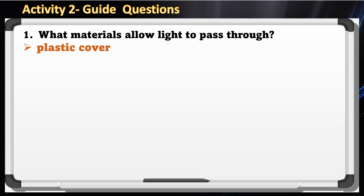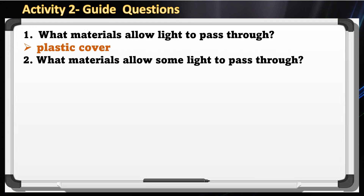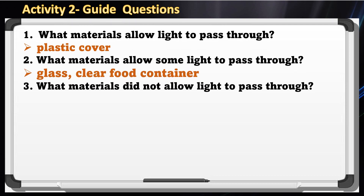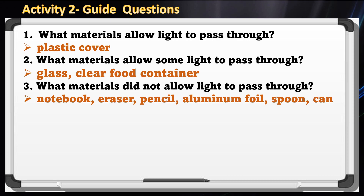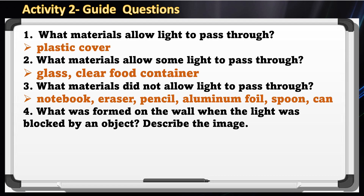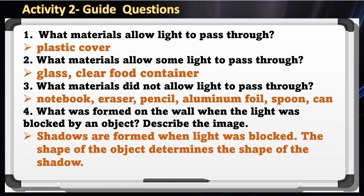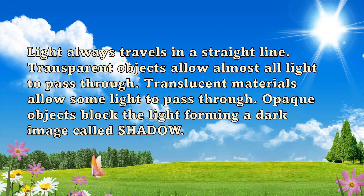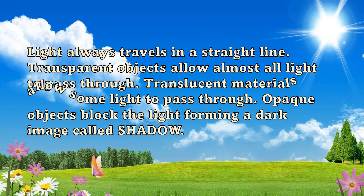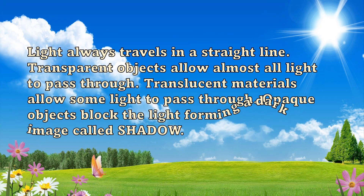Now let's answer the guide questions. One: What materials allow light to pass through? Two: What materials allow some light to pass through? Three: What materials did not allow light to pass through? Four: What was formed on the wall when the light was blocked by an object? Light always travels in a straight line. Transparent objects allow almost all light to pass through. Translucent materials allow some light to pass through. Opaque objects block the light, forming a dark image called a shadow.